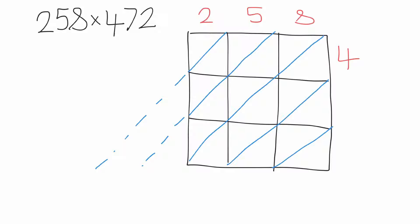4, 7, 2. So we'll do 2×4, that's 8. We'll do 5×4, that's 20. 8×4, that's 32. 2×7 is 14. 5×7, 35. 7×8 is 56. 2×2 is 4, 5×2 is 10, and 2×8 is 16.